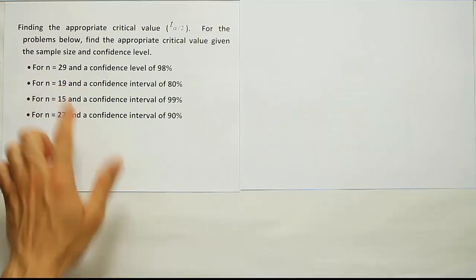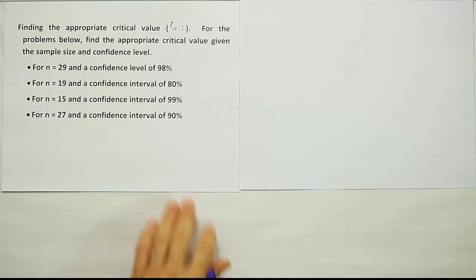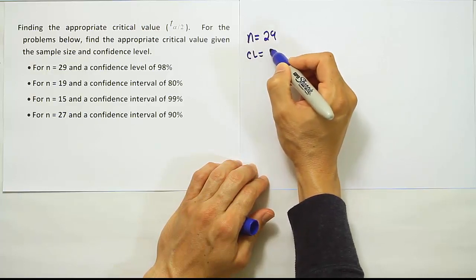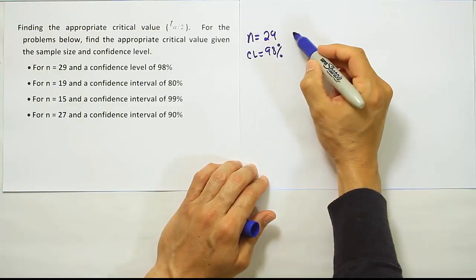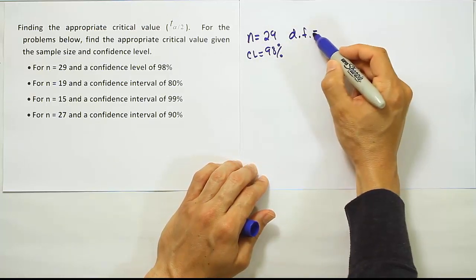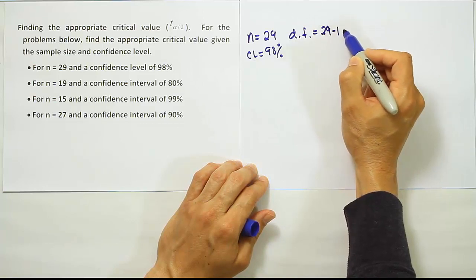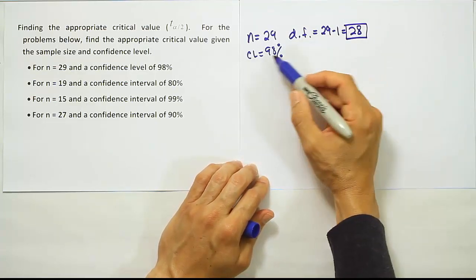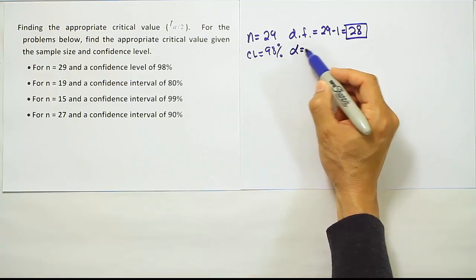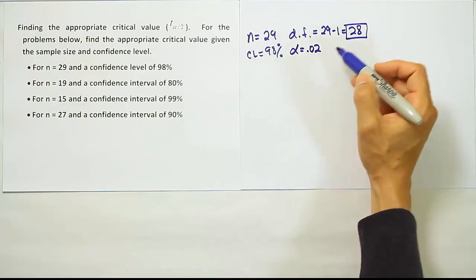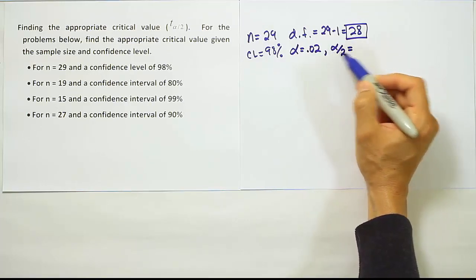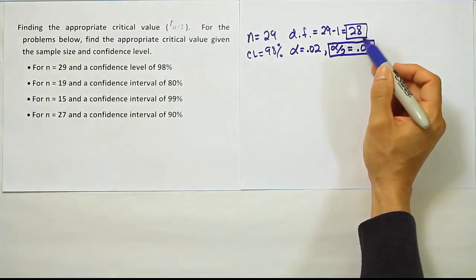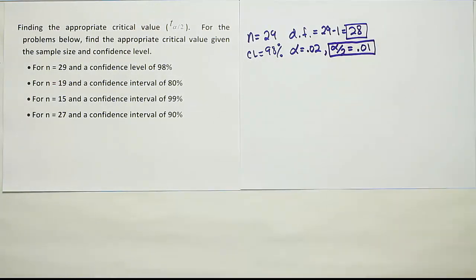The first example has n equals 29 and a confidence level of 98%. From that information we can infer two important things. The degrees of freedom is n minus one, so 29 minus 1 equals 28. We also need alpha divided by two: a confidence level of 98% means alpha is 0.02, and alpha divided by two is 0.01. It's this alpha divided by two value, along with the degrees of freedom, that we look up in our table.